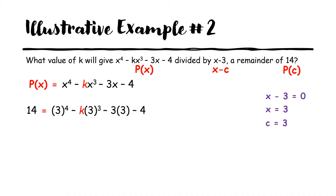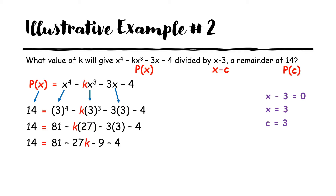Our equation becomes: 14 equals 3⁴ minus k times 3³ minus 3 times 3 minus 4. We replace p(x) with 14 since p(c) equals 14, which is our remainder. Performing the exponents: 14 equals 81 minus 27k minus 9 minus 4. Performing all multiplications and combining like terms: 14 equals negative 27k plus 68.